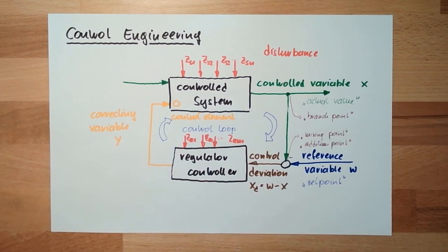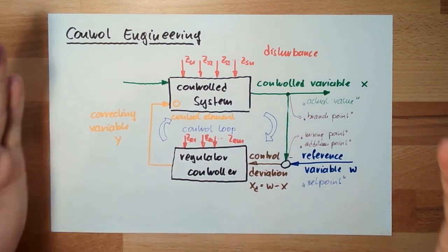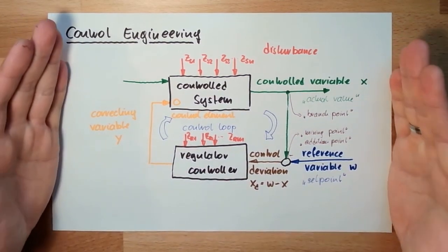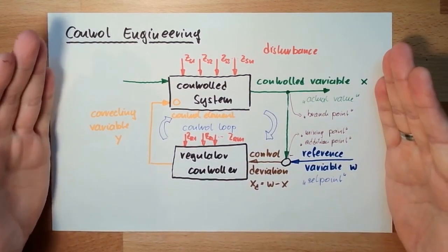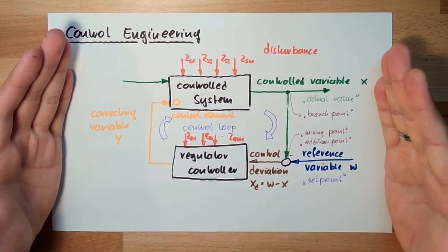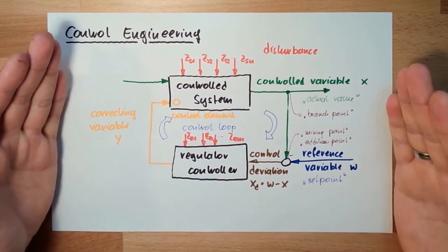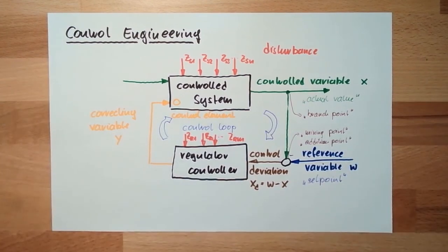If you are not sure what a term means, just think about this video. And now in our next video, we're going to talk about what needs to happen to plan a control system — what things we need to do, step by step. For this time, thank you very much for listening, and goodbye.